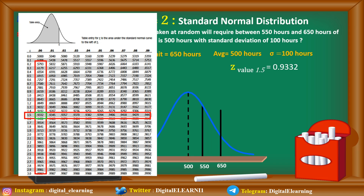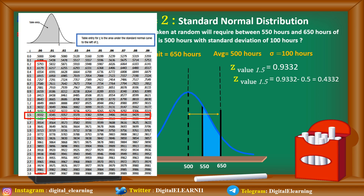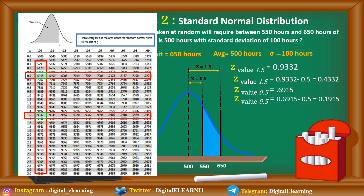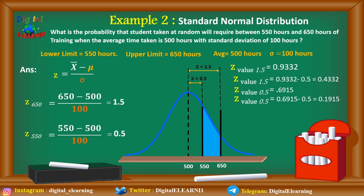Since the area under the curve is symmetrical with 0.5 on each side, we subtract: 0.9332 − 0.5 = 0.4332 for Z = 1.5. For Z = 0.5, from the Z-table we get 0.6915; subtracting 0.5 gives 0.1915. To get the area between 550 and 650, we subtract: 0.4332 − 0.1915 = 0.2417, which is 24.17%. So the probability that a student taken at random will require between 550 and 650 hours to complete the training is 24.17%.